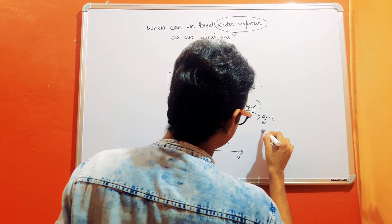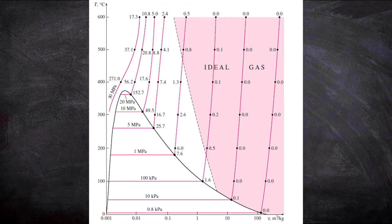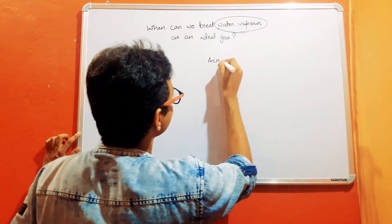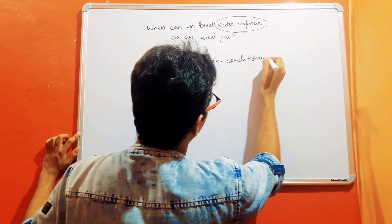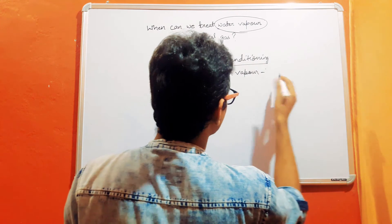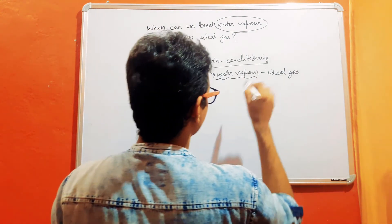Now, looking at the temperature versus specific volume (T-v) diagram of water, it is clear that at low pressure — below 10 kilopascal — water vapor can be treated as an ideal gas with negligible error of less than 0.1 percent. This is why in air conditioning applications we treat water vapor as an ideal gas, because the water vapor pressure is very low in those applications.